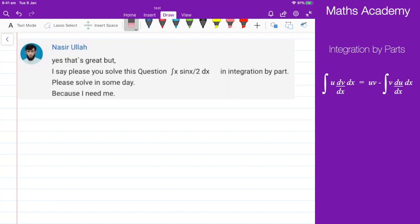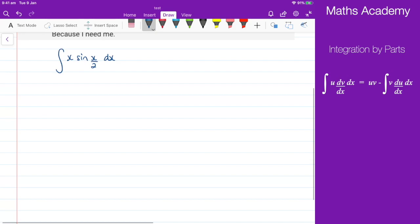So let's go ahead and make a start on that. We have the integral of x sine x over 2 with respect to x, and using integration by parts, we're going to say let u equal x and dv by dx, that is sine of x over 2.